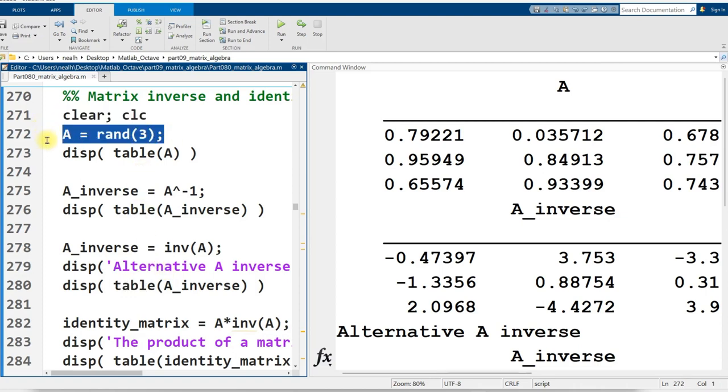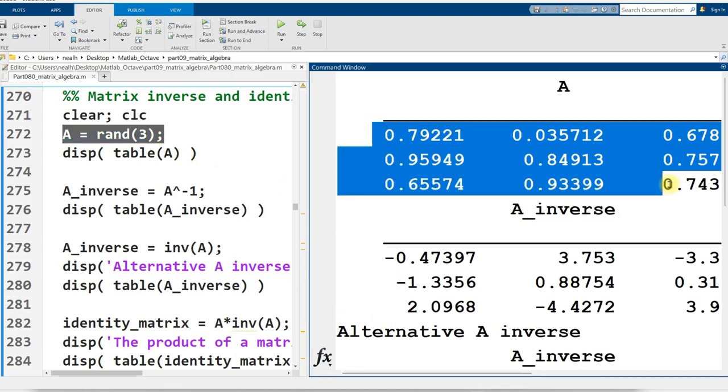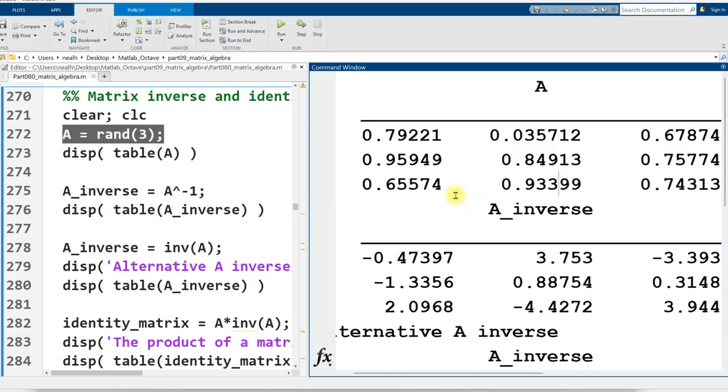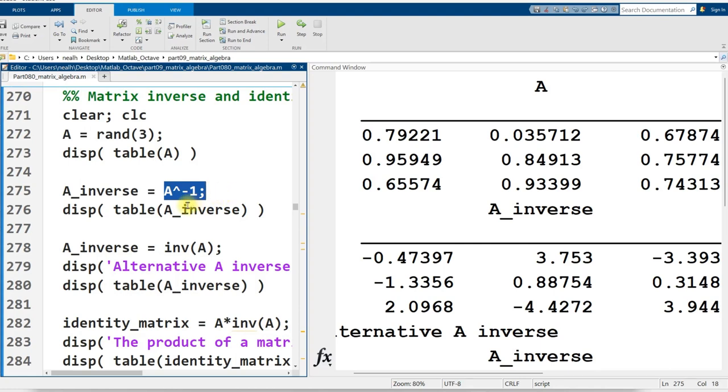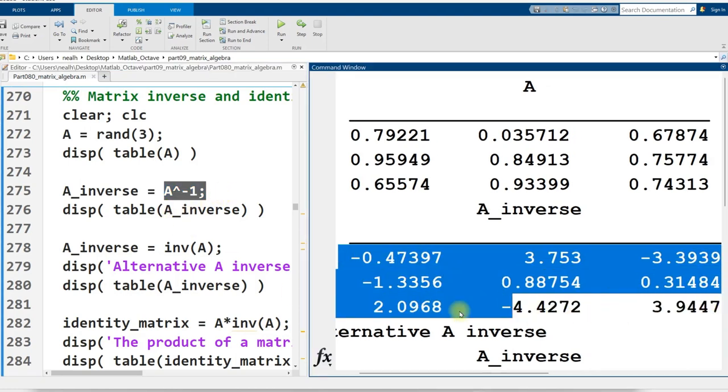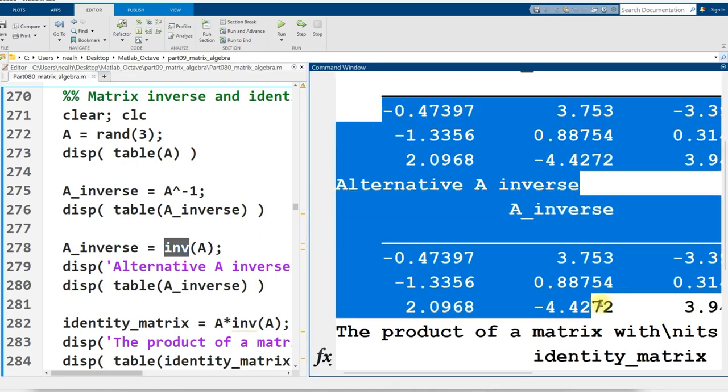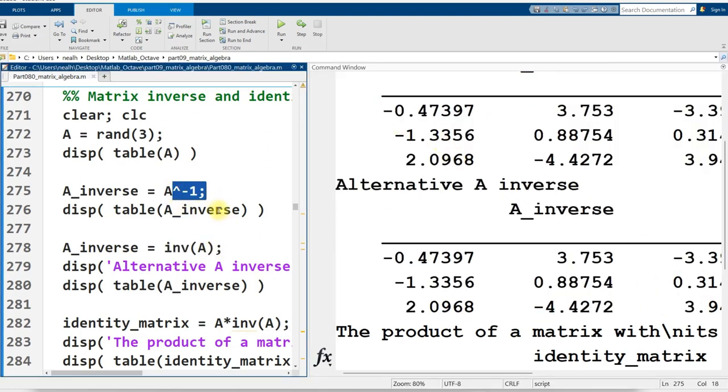I am generating a random 3x3 matrix with values between 0 and 1. Then I take A and I raise it to the negative 1 power to get the inverse of A, which is this right here. There are at least two ways of doing this. One is to raise the matrix to the negative 1 power. The other is to use the inverse function, which is abbreviated inv. And if I scroll down, you can see that I get the exact same result using that function as I got raising A to the negative 1 power.